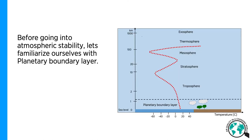But before going to atmospheric stability, let's first get familiar with the planetary boundary layer. The planetary boundary layer is that layer of atmosphere which is in direct contact with the surface. This means that any exchange process taking place between the atmosphere and the surface will go through this layer. For example, if there is evaporation taking place at the surface, the evaporated water needs to pass through the boundary layer before it can reach the higher atmosphere.